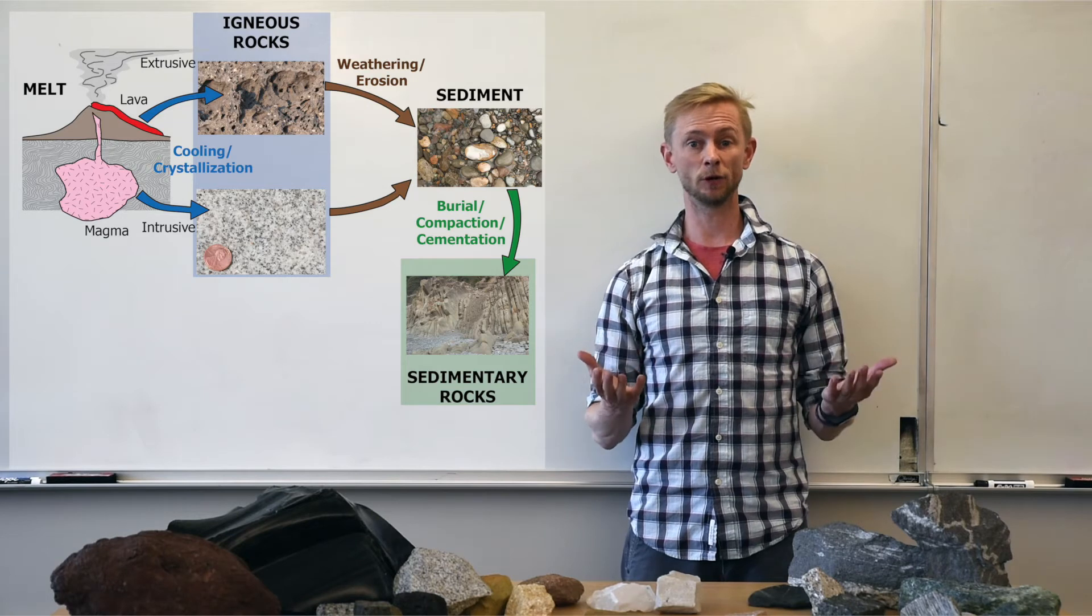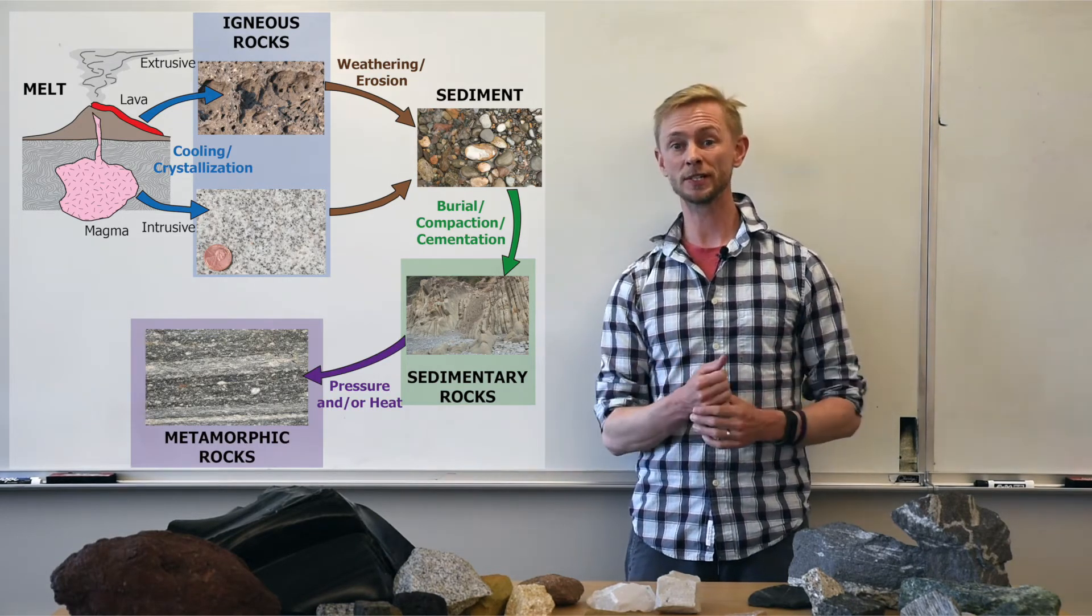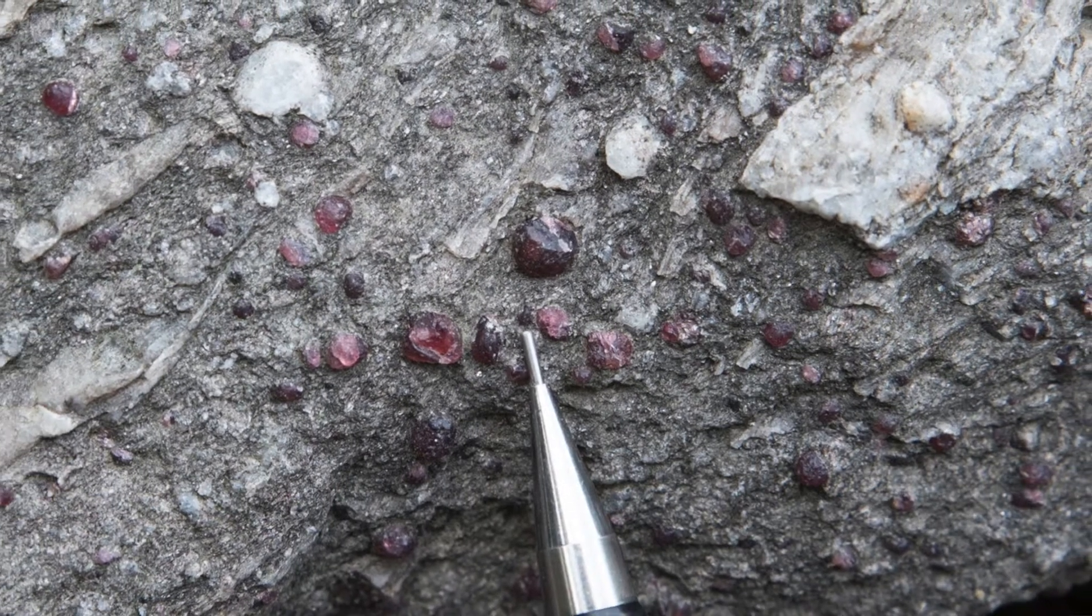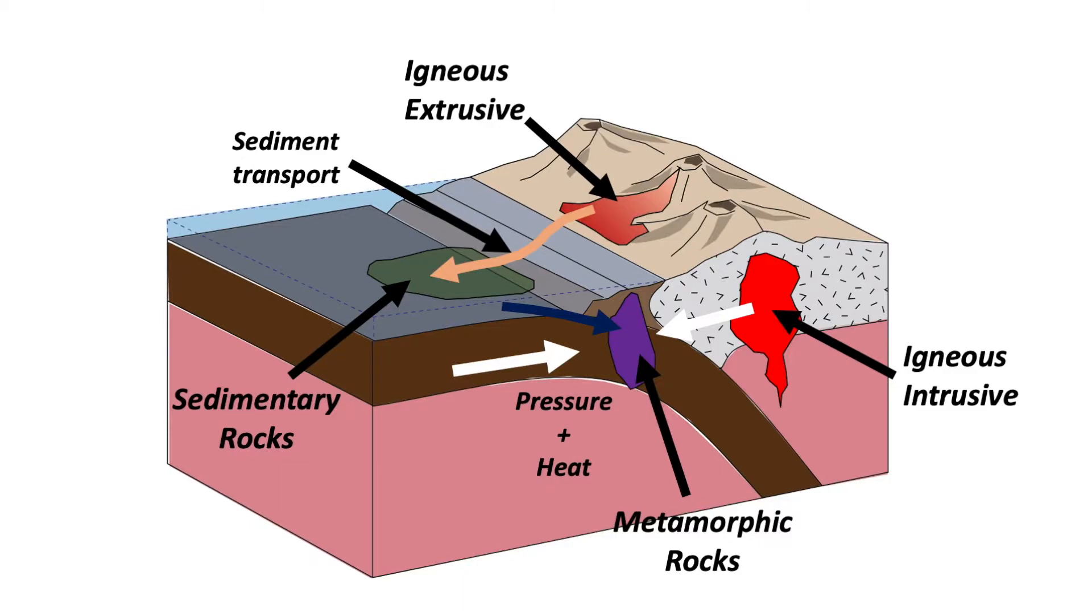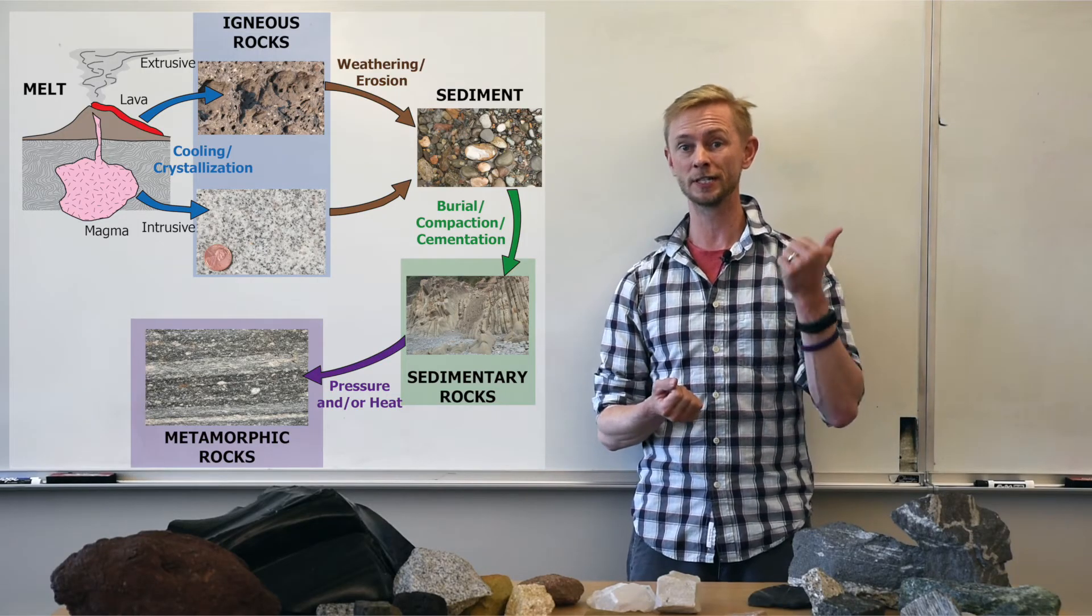This process of metamorphism produces, you guessed it, metamorphic rocks. Minerals present in metamorphic rocks record the pressure and temperature conditions within the Earth where the rock formed, essentially acting as a barometer and a thermometer for the Earth's interior.